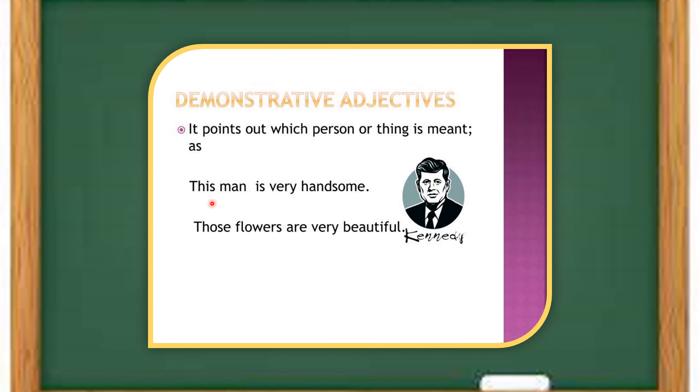Now let us look at those sentences. This man is very handsome. Those flowers are very beautiful. In these sentences, this and those serve as demonstrative adjectives.